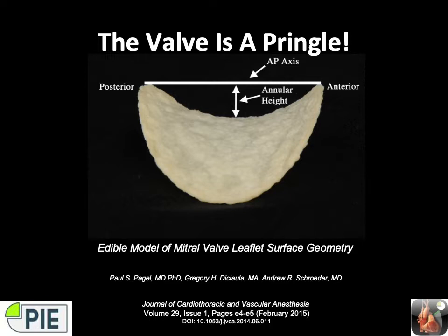The annular height is from the surface of the valve to the top of the AP diameter. It's super helpful to think of this as a saddle, but recognize that the saddle is atypical. If you're sitting in a real saddle it's longest from front to back and narrow in width, whereas it's the opposite here — it would be a very difficult saddle to fit on.